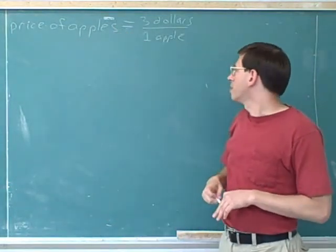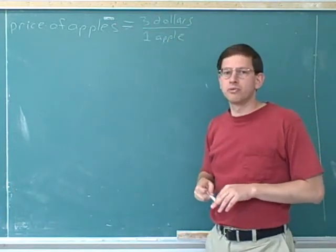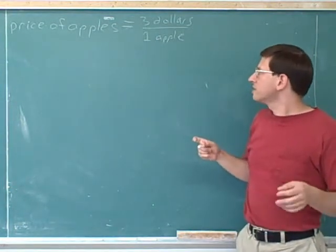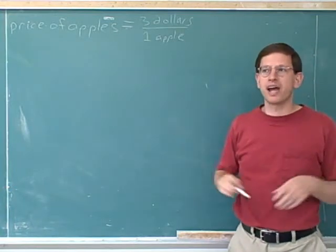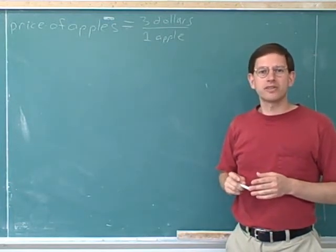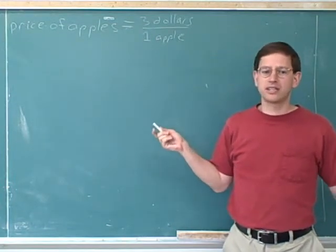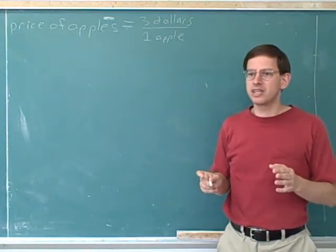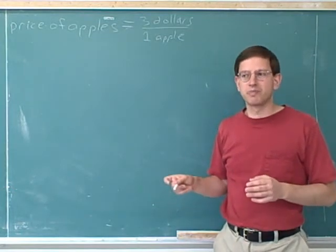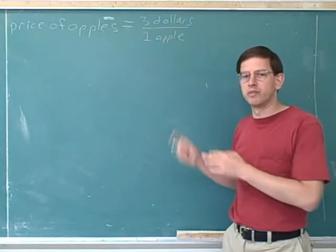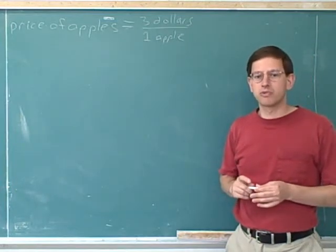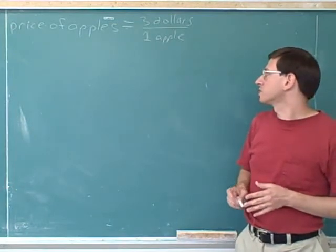Let's get back to these apples. The price was three dollars per one apple. Now that we've rewritten it like this, we can get a more intuitive understanding of what this ratio unit means. What does it mean to say the price of apples is three dollars per apple? It means that if you buy one apple, it will cost you three dollars. This is our key concept for this whole series of videos — it might seem trivial, but many students in physics and chemistry are not understanding and applying it.